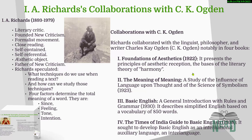Richards is often called the father of New Criticism. He was one of the first to treat literary interpretation like a science — asking: what's going on when we read a text? What techniques are we using, and how can we study those techniques? Richards had this idea that four factors are in the mix when we are trying to figure out what a word really means.